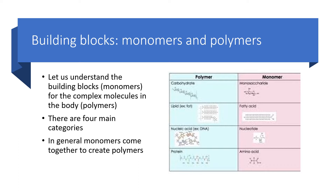Now it's time to understand the building blocks. The building blocks are monomers, and the complex molecules are the polymers. There are four main categories. Carbohydrates are the polymer, with the monomer being a monosaccharide such as glucose. Lipids such as triglycerides are the polymer, with fatty acids as the corresponding monomer. Nucleic acids such as DNA and RNA are made up of nucleotides, the monomers. And proteins are made up of amino acids, the monomers. In general, monomers come together to create polymers.